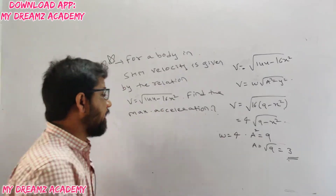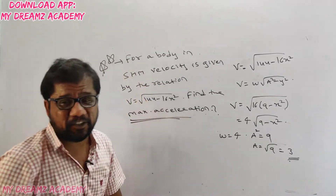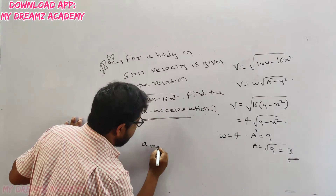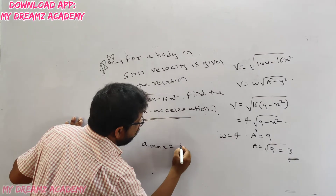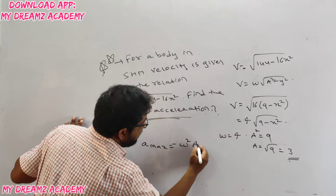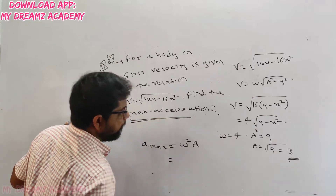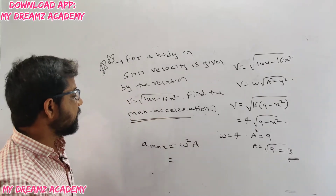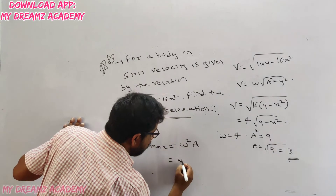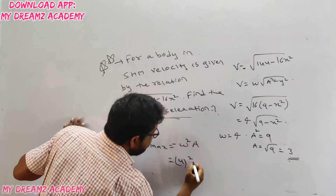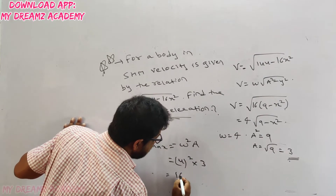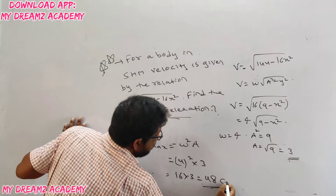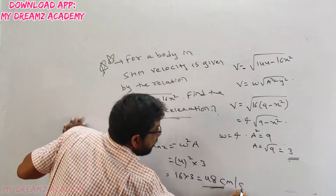Maximum acceleration = ω²A = 4² × 3 = 16 × 3 = 48 centimeters per second squared. This question has appeared in various exams 30 to 40 times with the same value: v = √(144 − 16x²).